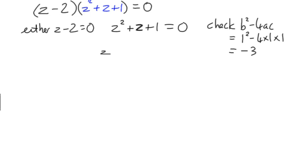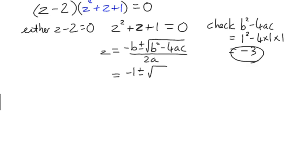So, z equals negative b plus or minus the square root of b² minus 4ac all over 2a. Negative b is negative 1 plus or minus the square root of, well, we've already done our check, and we've already discovered that b² minus 4ac is negative 3, so that can go in there, divided by 2 lots of a is 2.